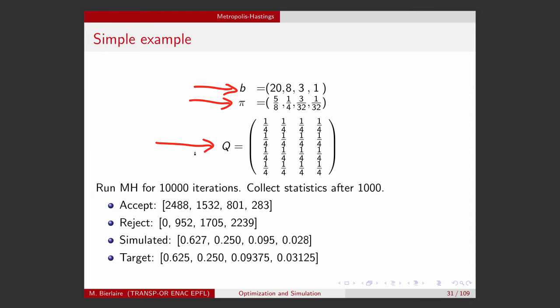We call this a random walk. For each state, I jump to the next state by drawing from a uniform distribution over 1 to 4. I applied the Metropolis-Hastings algorithm for 10,000 iterations, collecting statistics after dropping the first 1,000 days. We obtain the number of accepts and rejects for each state, and the simulated values are close to the target values to reasonable degrees of precision. This illustrates the concept: I use a pure random walk to explore the space, and use the target probability to decide which candidates to accept or reject.